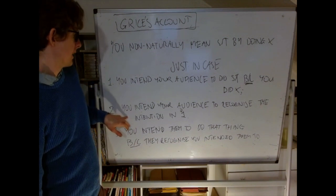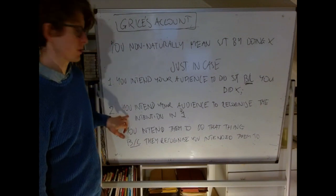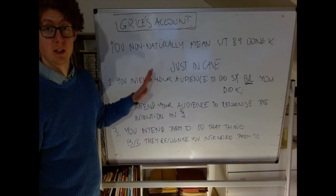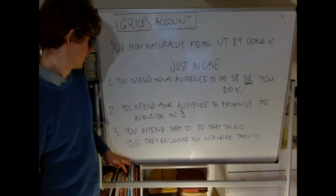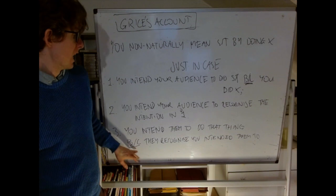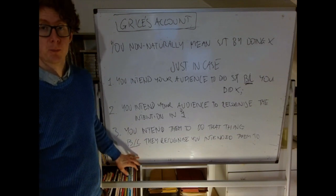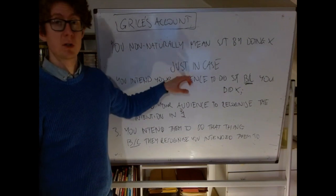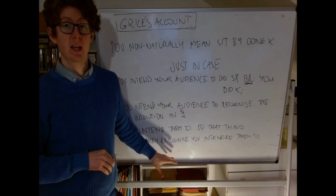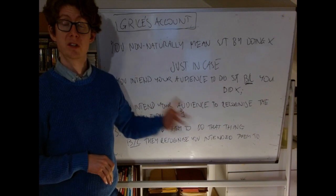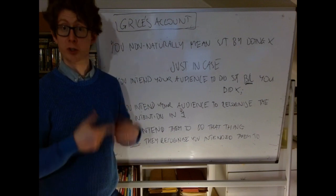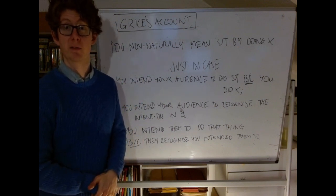First, you have to intend your audience to do something because you did X. Second, you intend your audience to recognize the intention in condition one — that is, you intend your audience to recognize that you intended them to do something because you did X. This is to get rid of cases involving deception. And finally, you intend them to do that thing because they recognize that you intended them to do so. So when I say 'close the door,' that should give you a reason to close the door precisely because you recognize that I intend for you to close the door.